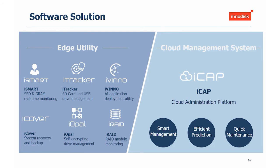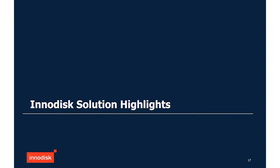Now I want to discuss our software solutions. They are divided into two parts: an edge solution and a cloud management system. iSmart is one of our most well-known tools — you can use it to read information from your disk such as lifespan, PE cycle, and temperatures, and you can set write protection functions. Another important tool is iOpal. Some of our disks need protection for certain uses. We have implemented iOpal on specific SSD products, making them self-encrypting — if somebody steals or loses your disk, it is impossible to retrieve the data. We also have a cloud solution called iCAP.